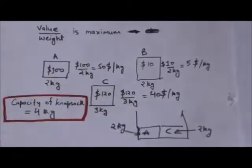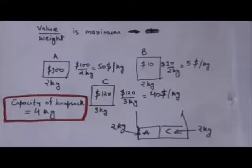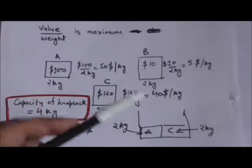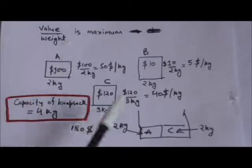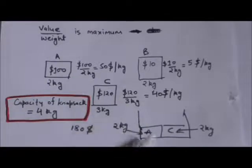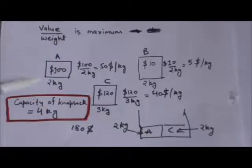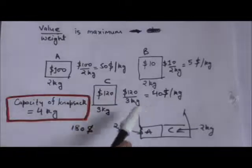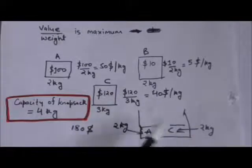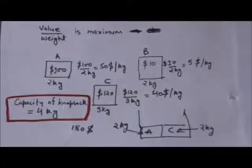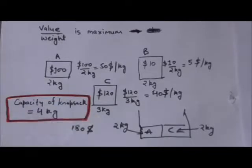Now the maximum capacity of 4 kg has been reached and we cannot put any more weight in the knapsack. The maximum value is calculated as: 2 kg of item A gives $100, and 2 kg of item C gives $80. So the maximum value that can be put in the knapsack is $180.